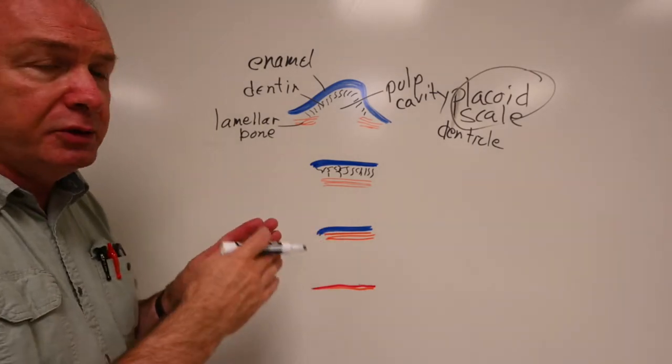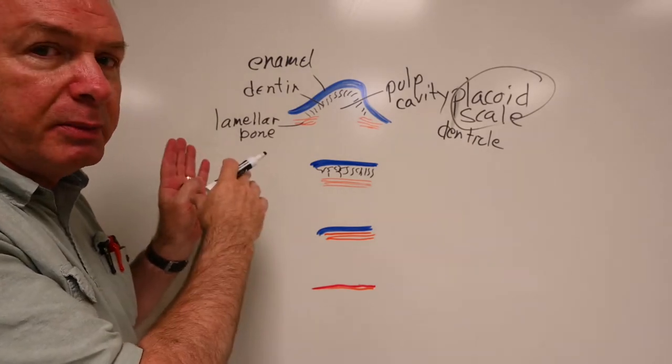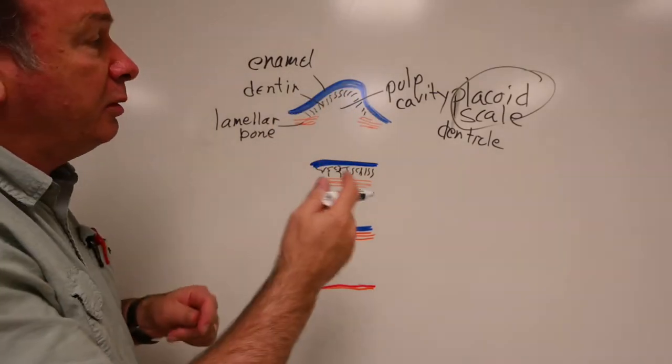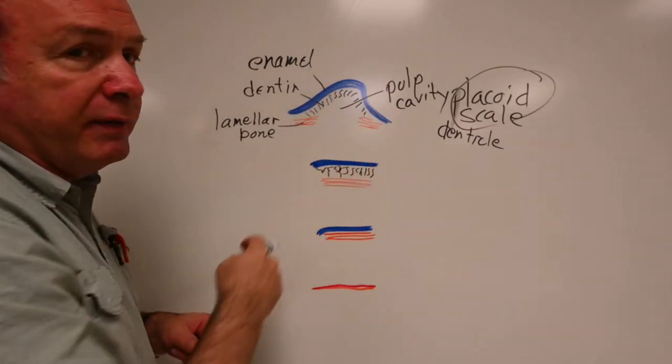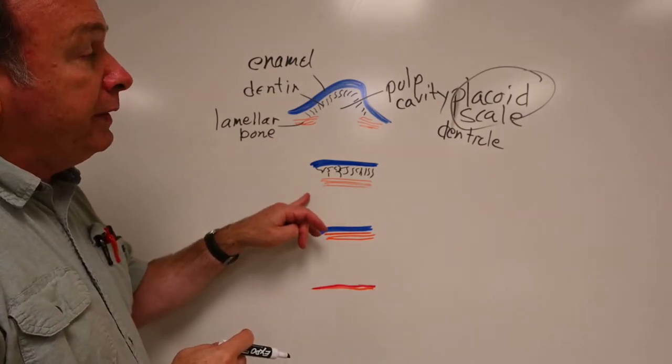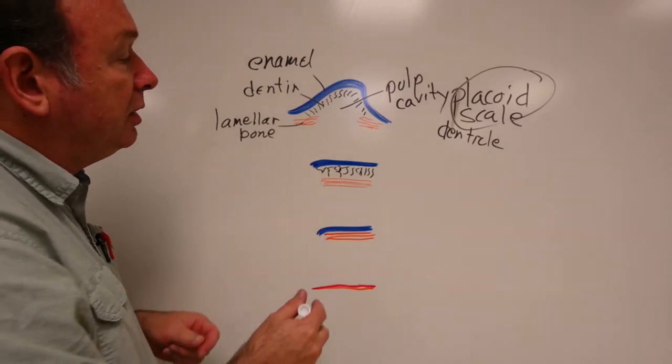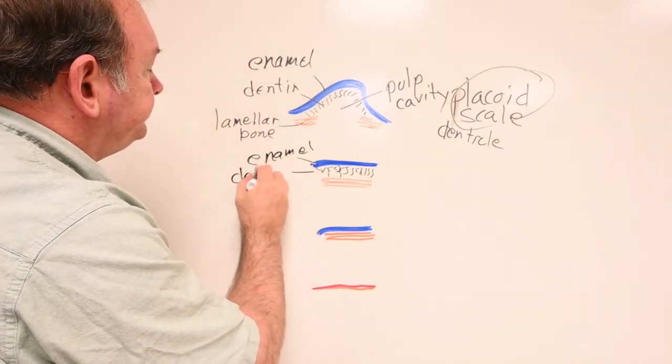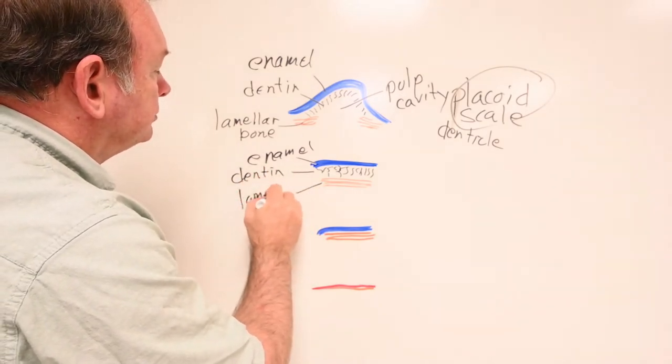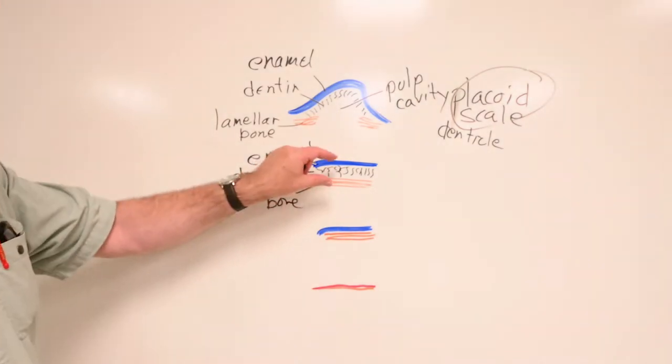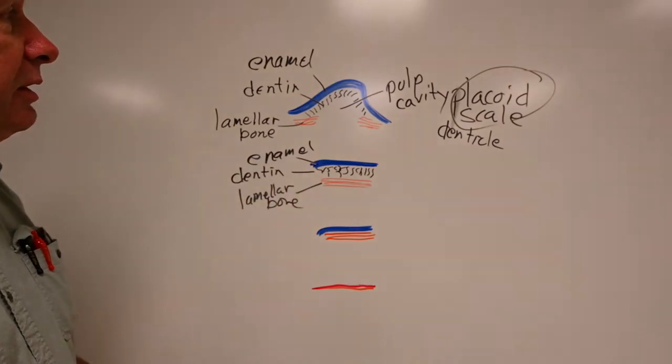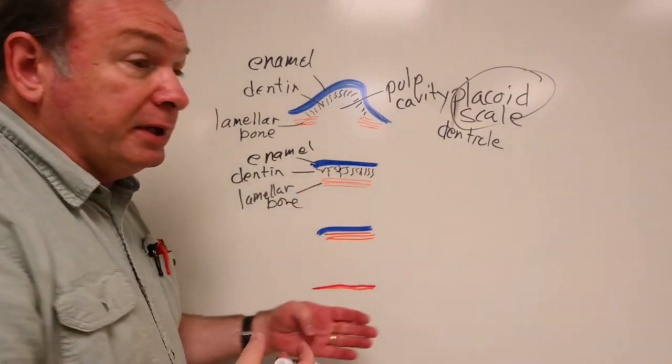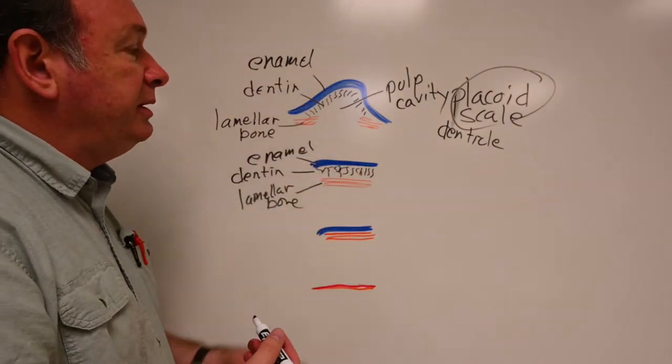We have enamel and dentin forming our tooth, and then in the middle is a pulp cavity. We don't have the lamellar bone as the base for that. This type of scale is called a placoid scale. Sometimes it's referred to as a denticle. If you think of it in terms of your phylogenetic chart, that initial scale we talked about before was agnathen type. The first extension above that would have been the chondrychthian fish.